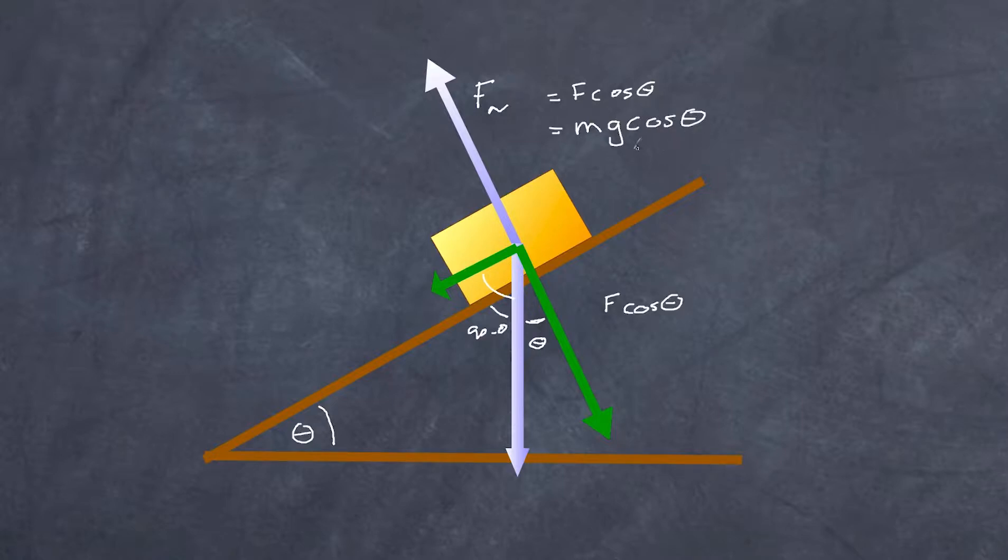And I hope you can appreciate the fact that this value is less than the weight of the block because cosine angle is always less than one. Similarly speaking we have of course a force down the plane a component down the plane and that's going to be equal to Mg sine theta down the plane.